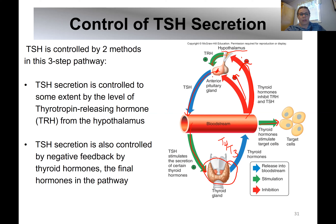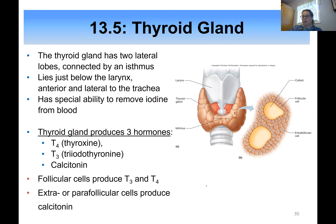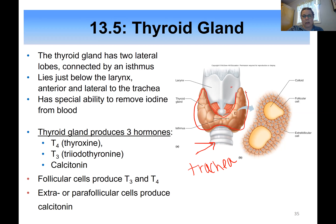This is a reminder that the hypothalamus controls the anterior or sometimes the posterior pituitary, and then that gland controls a peripheral gland — in this case, the thyroid. The thyroid sits just underneath the larynx and right at the top of the trachea. Besides acting as an endocrine gland, it removes iodine from the blood and helps with iodine metabolism in the body.